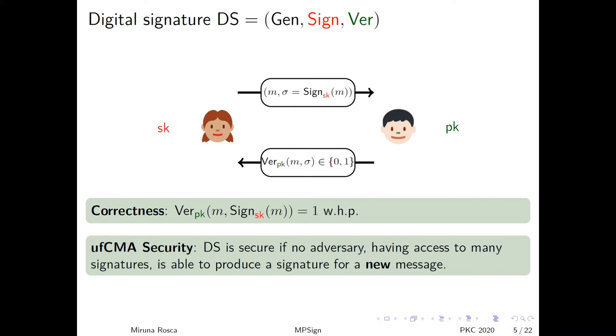The security notion we are interested in this paper is the following one. We say that a digital signature is unforgeable against chosen message attacks in the quantum random oracle model if no adversary having quantum access to the random oracle and classical access to the signing oracle is able to produce a signature for a new message.